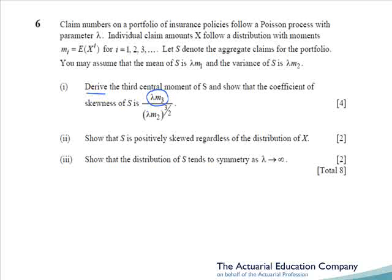The approach would have been to use the given formula for the MGF of S. Once we've got this, we can obtain the CGF by logging the MGF. We can then obtain the third central moment or the skewness of S by differentiating the CGF three times and substituting in t=0. This will give us lambda m3 as required for the numerator. To obtain the coefficient of skewness, we divide the skewness by the variance to the power of 3/2, obtained by differentiating the CGF twice and substituting t=0.